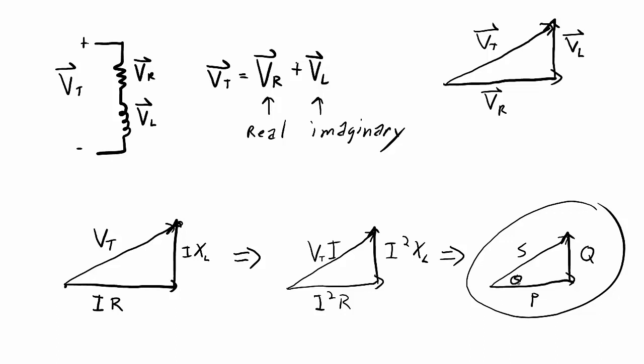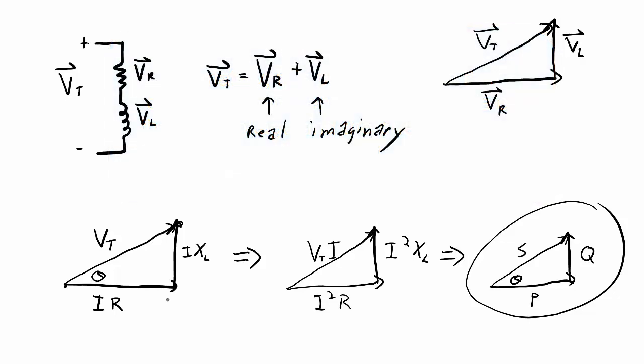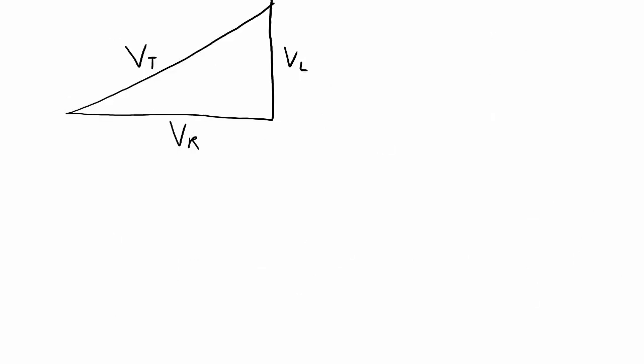One piece of information missing is the phase angle between the apparent power and the real power. That angle theta is the same as the angle theta in the voltage triangle — the angle between the total voltage and the voltage across the resistor — which is the phase angle between the total voltage and the total current.